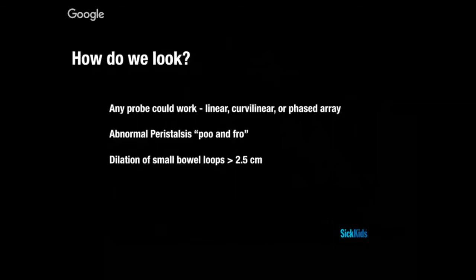We see abnormal peristalsis, which we call to-and-fro — movement back and forth because peristalsis is pushing against a stationary obstruction. We also look for dilation of the small bowel; in adults, greater than two and a half centimeters is the threshold considered most sensitive for SBO. If you want to differentiate jejunal from ileal obstruction, the jejunum typically has more prominent and numerous valvulae conniventes, whereas the ileum lacks those folds.